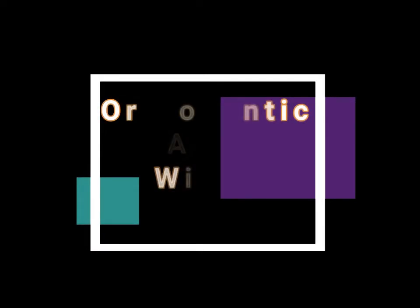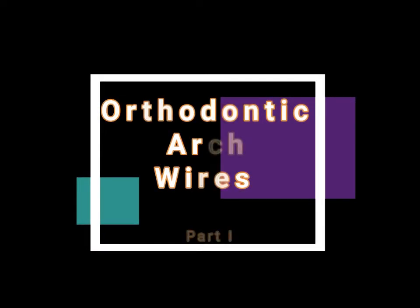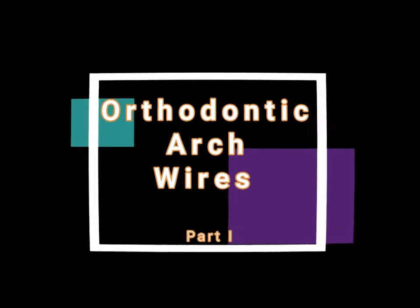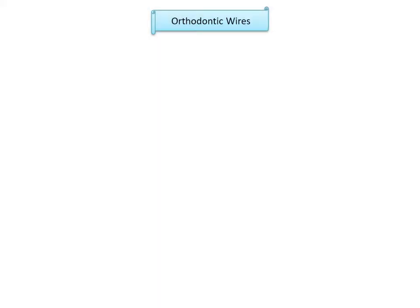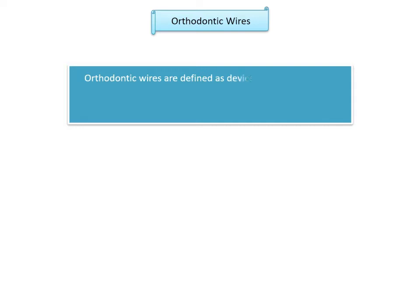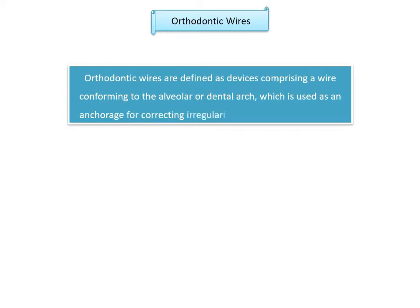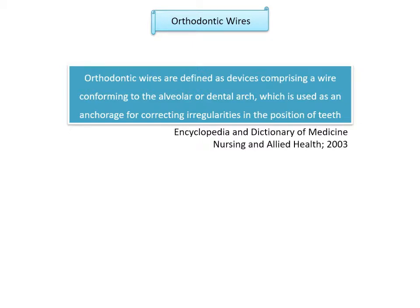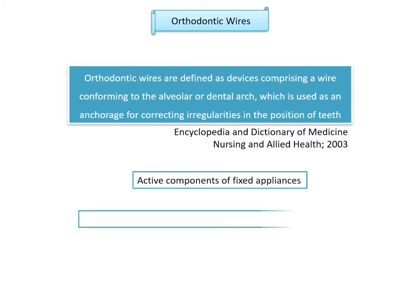Orthodontic arch wires. A successful orthodontic therapy depends not only on manual skills and knowledge of treatment steps, but also on knowledge and choice of materials used. One of the major components of fixed orthodontic therapy is the choice of wires. Orthodontic wires are defined as devices comprising a wire conforming to the alveolar or dental arch, which is used as an anchorage for correcting irregularities in the position of teeth, as given by the Encyclopedia and Dictionary of Medicine, Nursing and Allied Health, 2003. Orthodontic arch wires are active components of fixed appliances and bring about tooth movement via brackets and buccal tubes.